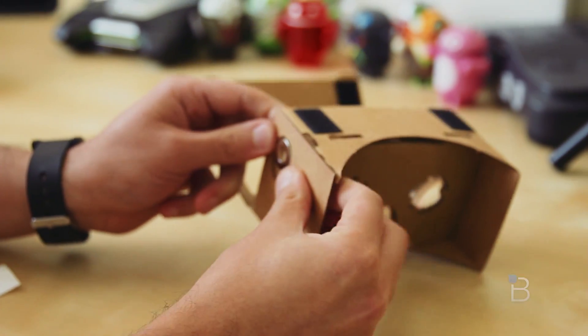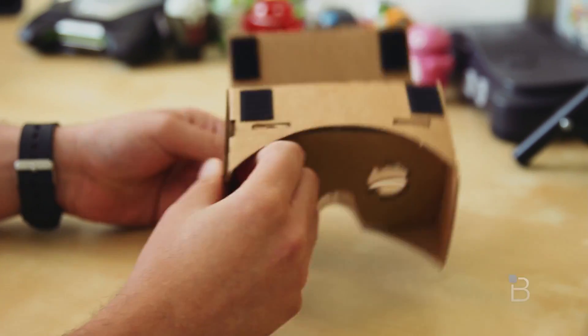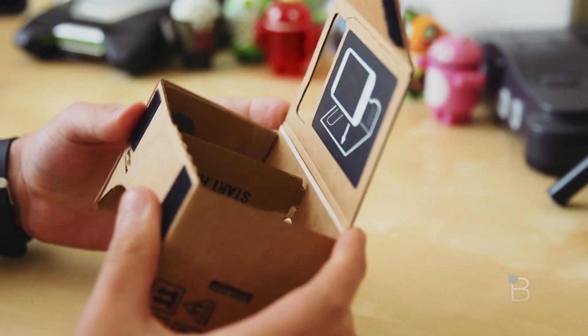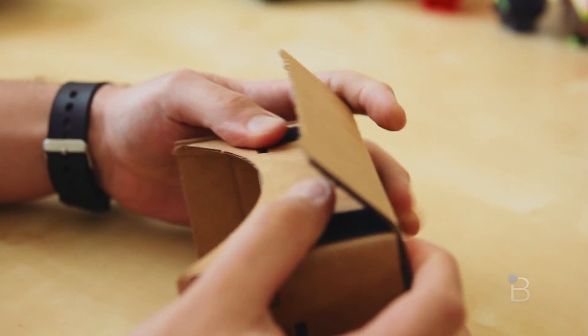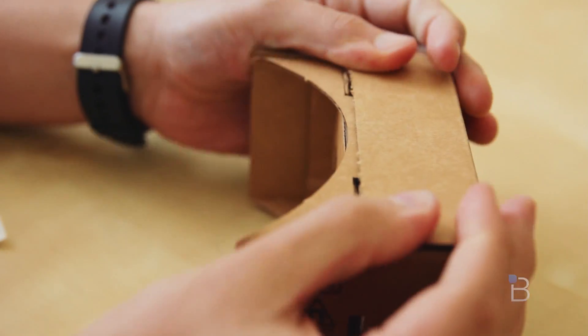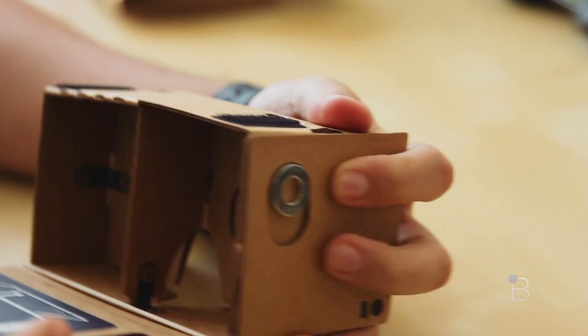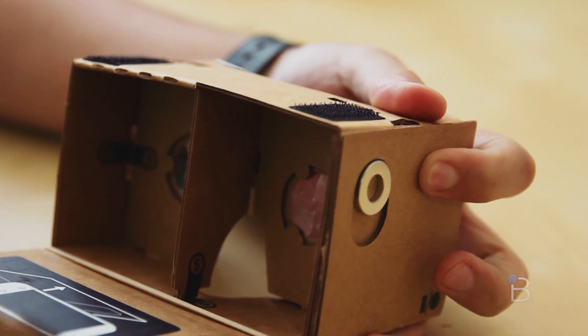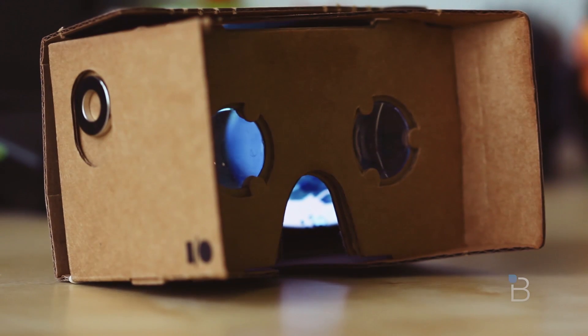In addition to that, Cardboard takes advantage of the device's sensors, allowing you to explore virtual interfaces along with a ring magnet that rests on the enclosure's side. The magnet essentially allows you to click inside of demos. This works by pulling and releasing the ring. Your phone's magnetometer will then detect the changes in the magnetic field, thus allowing you to easily interact with the demos inside the Cardboard app.